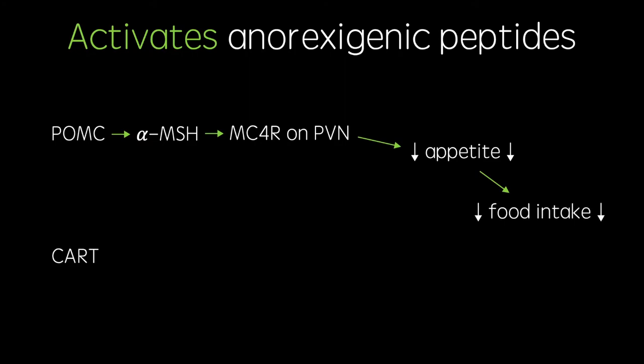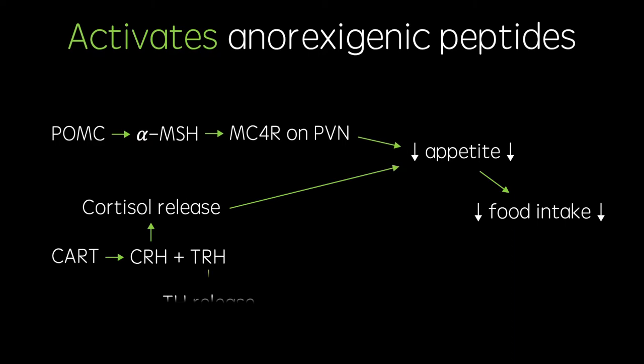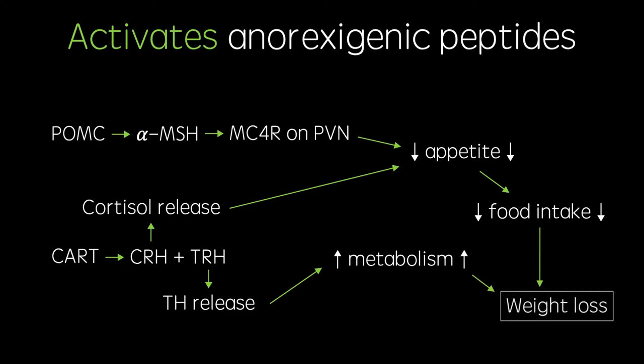Cocaine and amphetamine regulated transcript, or CART, is co-expressed with POMC and stimulates the release of CRH and TRH, which stimulate the release of cortisol, contributing to the reduction in appetite, and thyroid hormone, which increases the rate of metabolism. This, along with the reduction in food intake, produces weight loss.